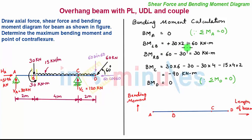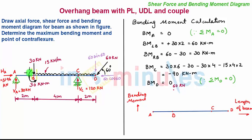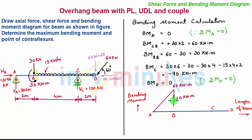At point B there are two values of bending moment. Towards the left of B we have 60 kNm, so by taking proper scale we plot a bending moment of 60 kNm. Between point A and B there is no force acting, so the variation of bending moment will be an inclined straight line. The bending moment towards the right of B is 30 kNm, so we plot that value at point B and connect them with a straight vertical line.